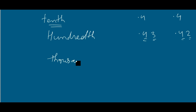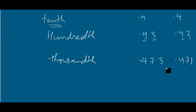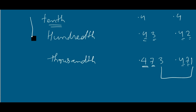If the hundredths place digit is also the same, then we next move to the thousandths place. For example: 0.473 and 0.471 — the tenths place digit is equal, so we compare the thousandths place digit. In this way we do comparison of decimal numbers.